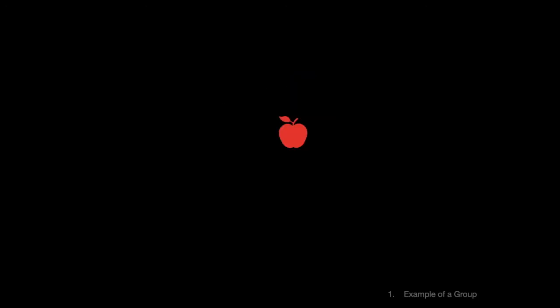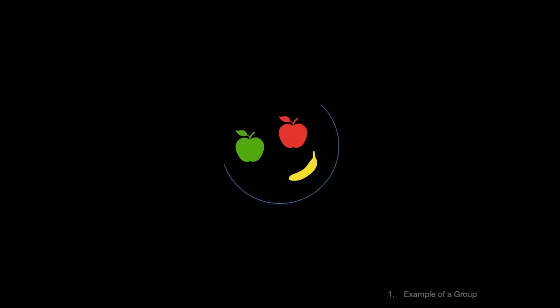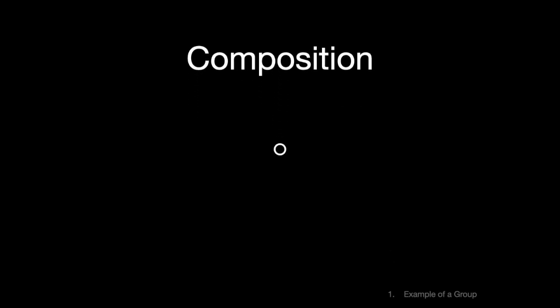In math, any collection of things can be called a set. But here, there's clearly some special structure that sets this set apart from a mere bowl of fruit. For one, any pair of these things can be combined by doing them in succession. Combining actions is called composition. It's represented with this symbol. If we have three actions, A, B, and C,